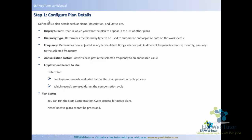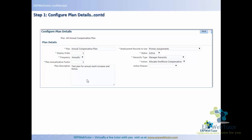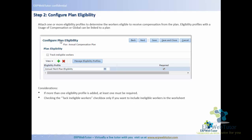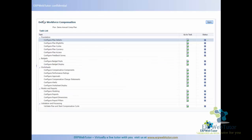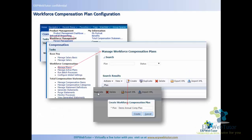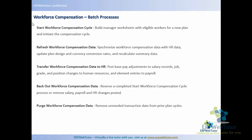Some key factors of the configure plan details step: display order is the order in which you want the plan to appear. After creating the plan, the first step is configure plan details, and step two is configure plan eligibility. Let's go to the application to see these steps hands-on and see the difference between the comp admin screen and the comp manager screen.